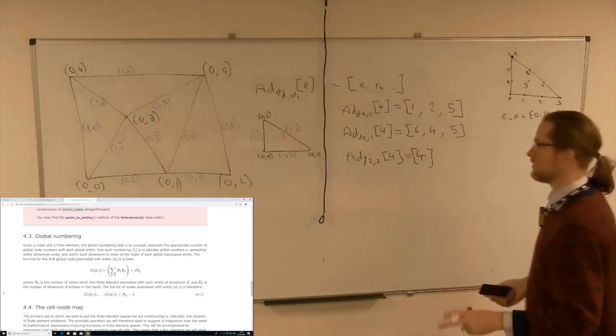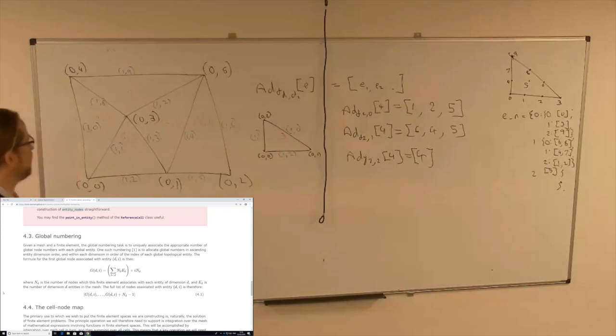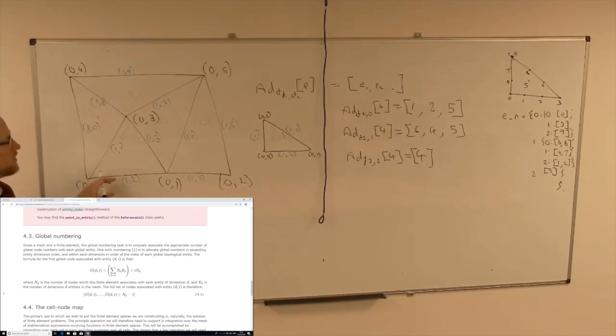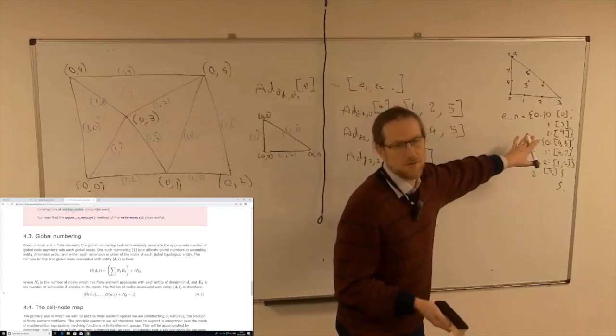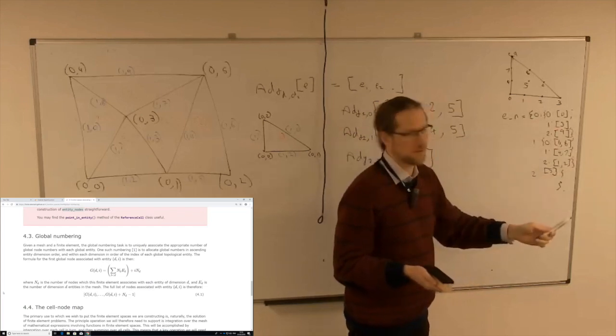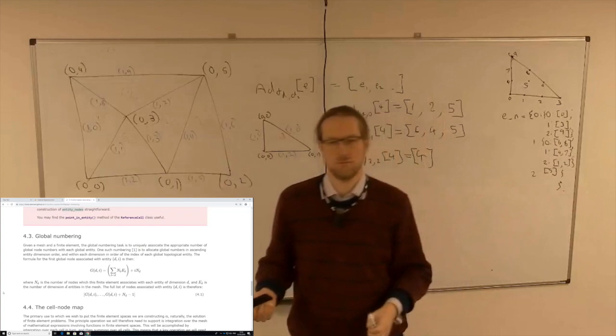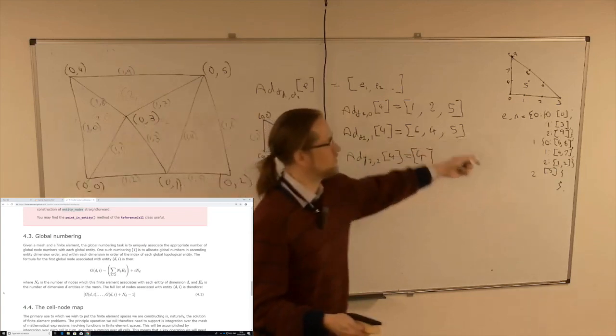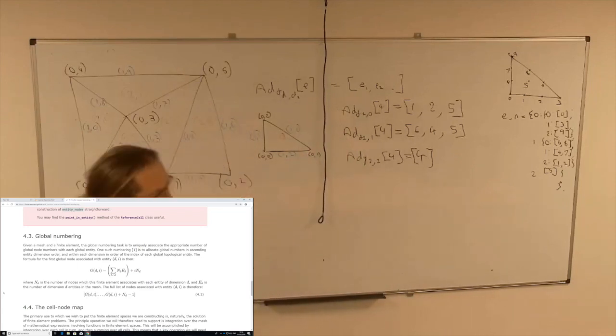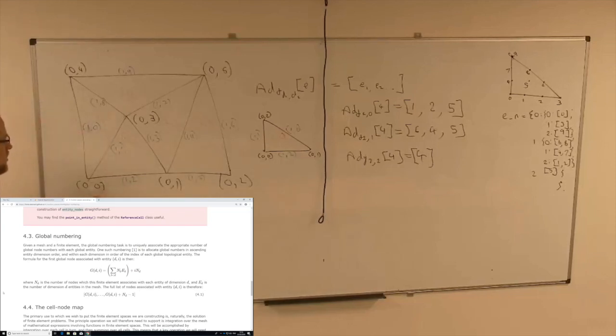Now we can actually do the first formula that's in there. What we now need to do is associate with each of these entities, each global entity, the right number of degrees of freedom. For this particular element, the right number of degrees of freedom is one if you're a vertex, two if you're an edge, and one if you're a triangle. You can ask the finite element to give you those numbers. After you have provided entity_nodes to finite element, it works out what those values are. We need to then associate to each one of these the right number of degrees of freedom. The degrees of freedom need to be numbered in one big contiguous list because eventually these things are going to be the entries in our vector and the rows and columns of our matrix.